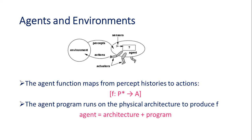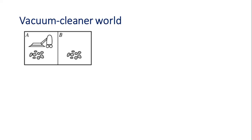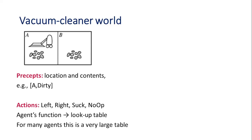One example of an agent is the vacuum cleaner program. We have two rooms, A and B, and there may or may not be dust in them, and there is a vacuum cleaner to clean both. The perception here is which room the vacuum cleaner is in and what the current situation at that location is — the room might be either clean or dirty. Based on this perception, actions are performed: move left, move right, clean if there is dirt, or perform no operation.